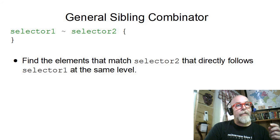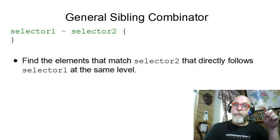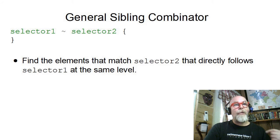The general sibling selector, which is the tilde or the squiggle, gets all of the selector 2s that follow selector 1 at the same level. So all of the siblings of selector 1 that follow that match selector 2, the general sibling combinator.